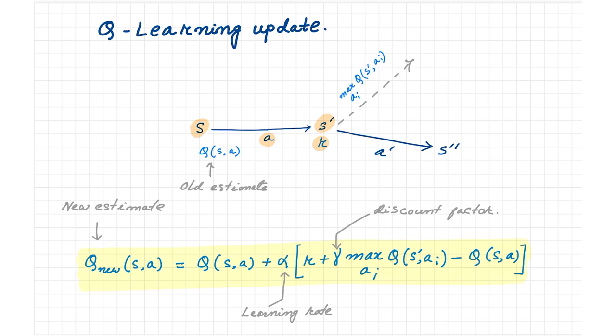Because unlike SARSA algorithm that we explained in the previous video, here we consider the Q value that is maximum in the next state. While in SARSA we consider the Q value for the action that we actually take in the next state. Thus Q-learning is called an off-policy algorithm. We update the Q values towards the greedy target policy and not towards the policy that we are actually following.